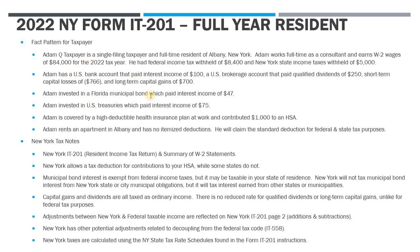Let's go through the fact pattern first, talk about some New York state tax differences, and then we'll look at the 1040 and the IT-201. Adam Q. Taxpayer is a single filing taxpayer who lives in Albany. He works full time as a consultant with W-2 income of $84,000 for 2022. His W-2 shows federal income taxes withheld of $8,400 and New York state taxes withheld of $5,000.